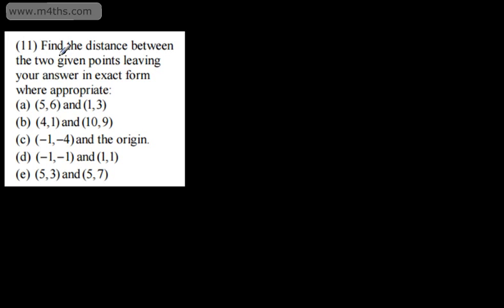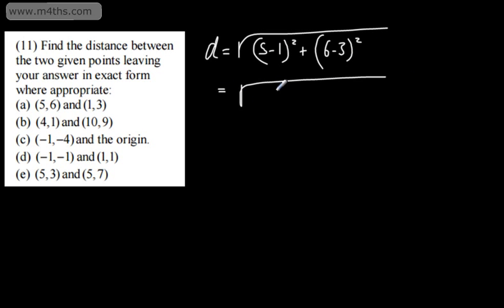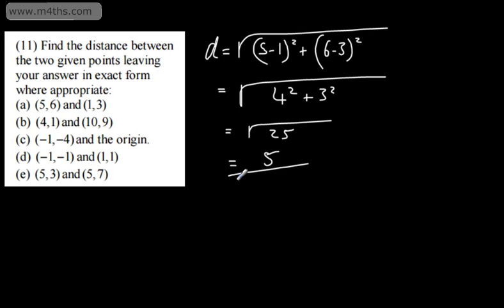Find the distance between the two given points, leaving your answer in exact form where appropriate. The distance for the first one is the change in the x-coordinates: 5 minus 1, squared, plus 6 minus 3, squared. So this is the square root of 4 squared plus 3 squared, which gives us the square root of 25 — exactly the same length as before, just with different coordinates. That is 5.